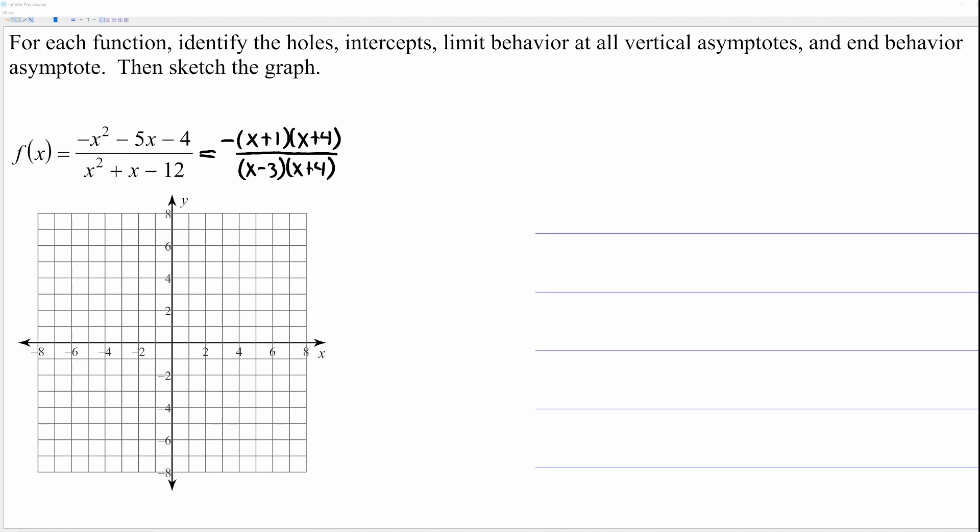To speed things up, I went ahead and factored the numerator and denominator, which you always want to do when you're graphing a rational function. Now, with the properties we saw last time, I'm not going to talk about those in any kind of detail, but we still need to find them if we're going to graph.